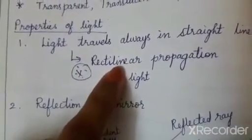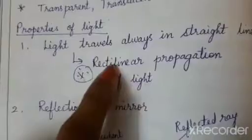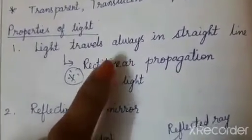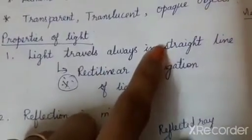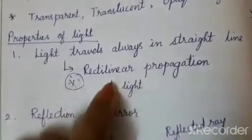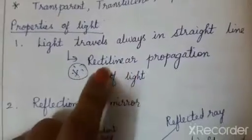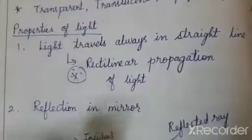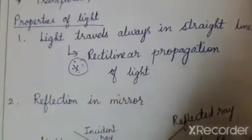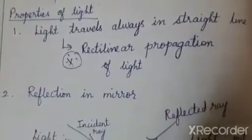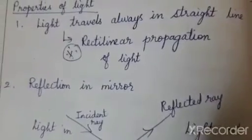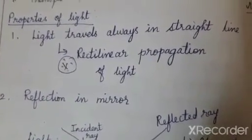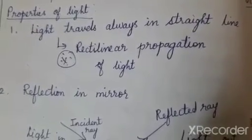In the last chapter we saw a type of motion called rectilinear motion — the movement of objects in a straight line. Since light travels in a straight line, we call it rectilinear. Propagation means passage or passing through. So light always travels in a straight line, also called rectilinear propagation of light.